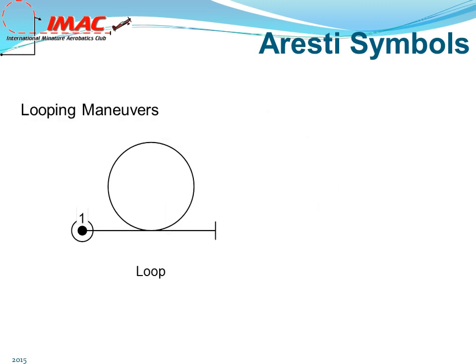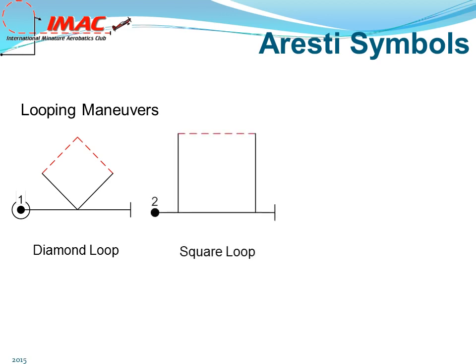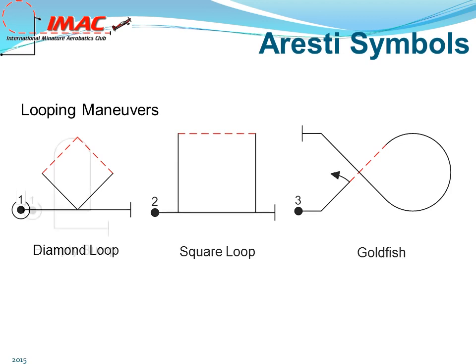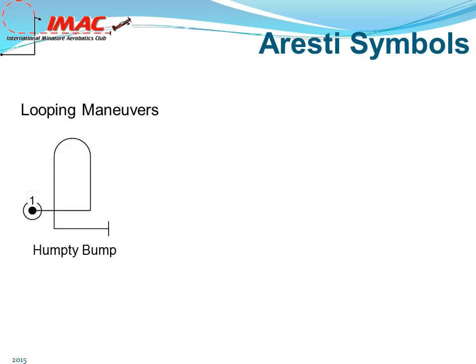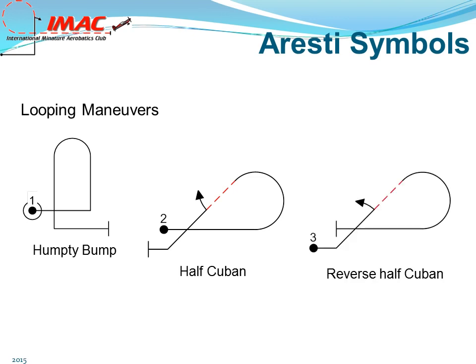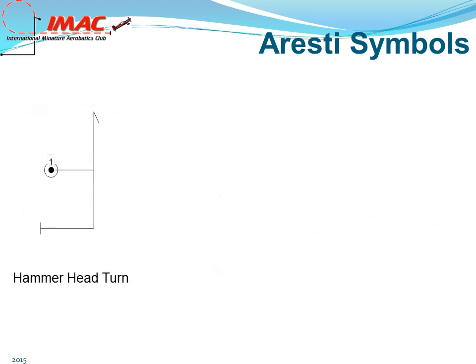This is the symbol for a loop. This is an Immelmann, or a half loop with a half roll on exit. Diamond loop. Square loop. A goldfish. This is a humpty bump. Half Cuban. Reverse half Cuban — note that the reverse half Cuban begins on the 45-degree upline, half roll to inverted, and then pulls the five-eighths loop. This is the symbol for a hammerhead or stall turn. This is a reverse teardrop. Shark tooth.